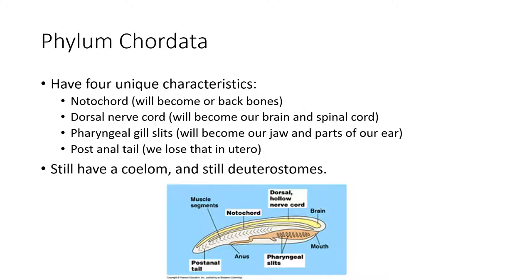Everything from here on is in phylum Chordata — a large phylum including most familiar animals, from fish all the way to humans. All members share four features at some point in their life cycle: a notochord (which in us develops into the vertebrae around our spinal cord), a dorsal hollow nerve cord (which develops into the brain and spinal cord), pharyngeal slits (which in us become part of the jaw), and a post-anal tail (which we absorb as an embryo).